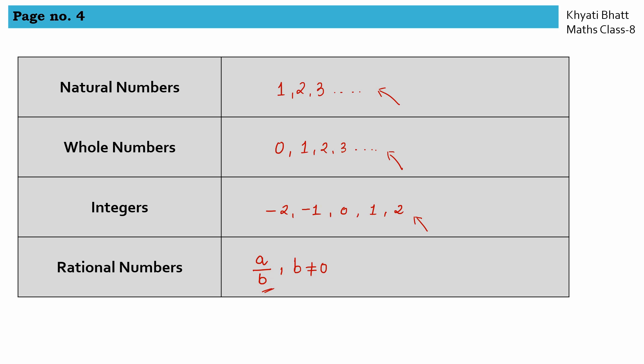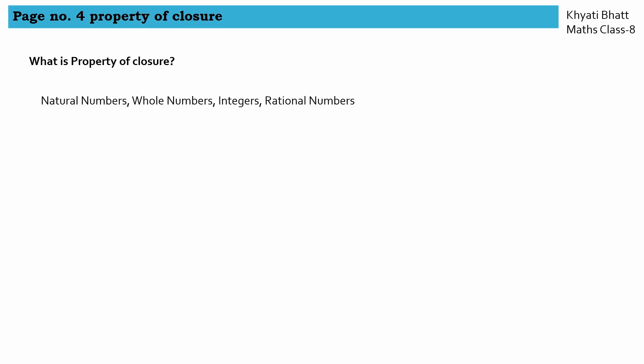Now let us understand the property of closure. In this chapter we are going to learn three properties: the first is the property of closure, the second is the commutative property, and the third is the associative property. For all these properties we are going to understand them for four types of numbers: natural numbers, whole numbers, integers, and rational numbers.